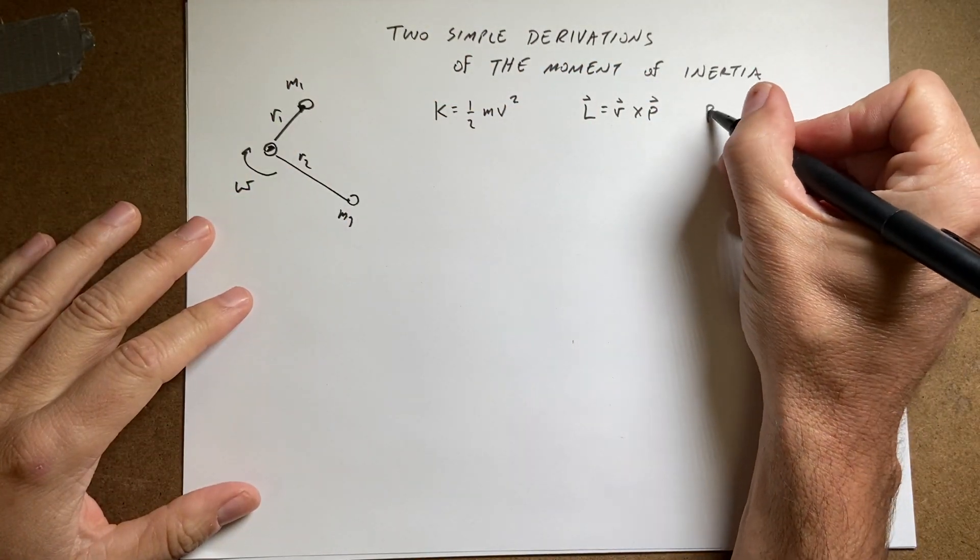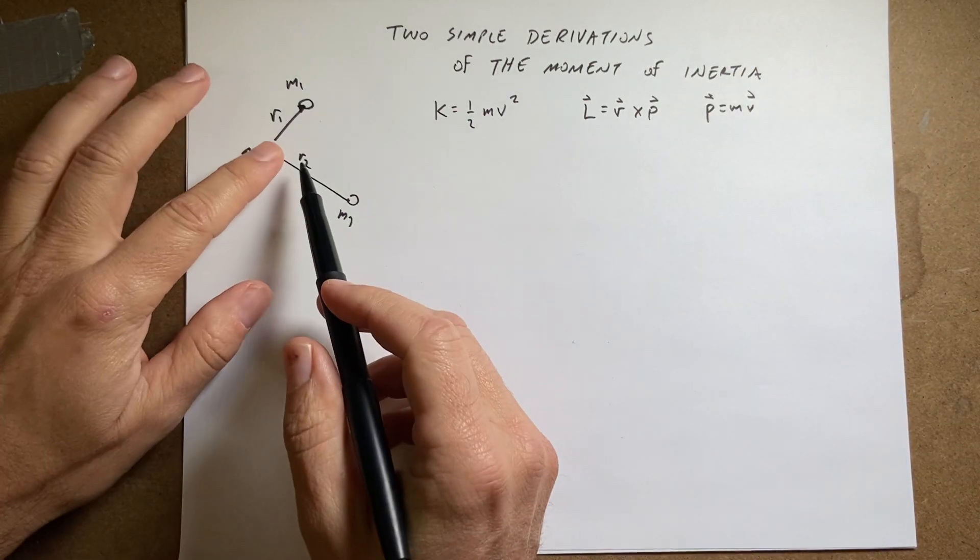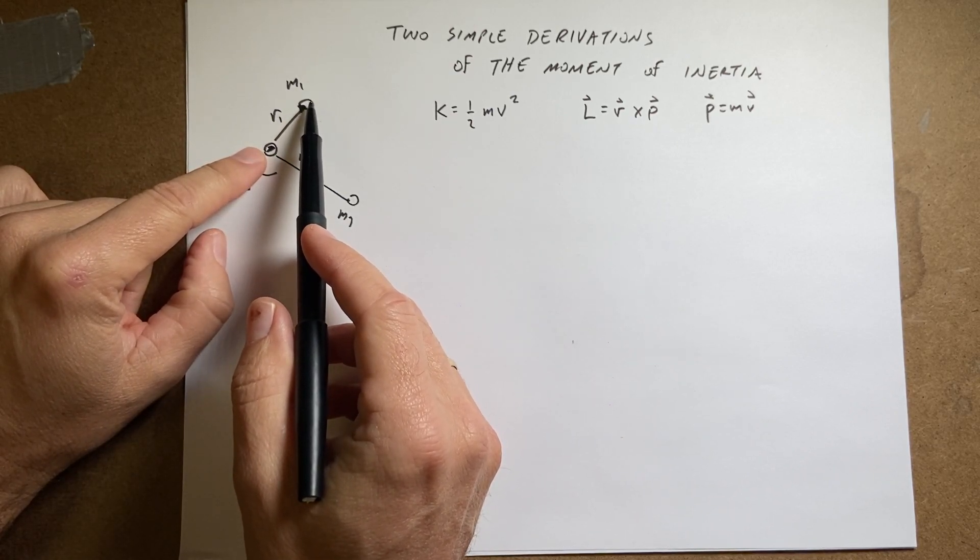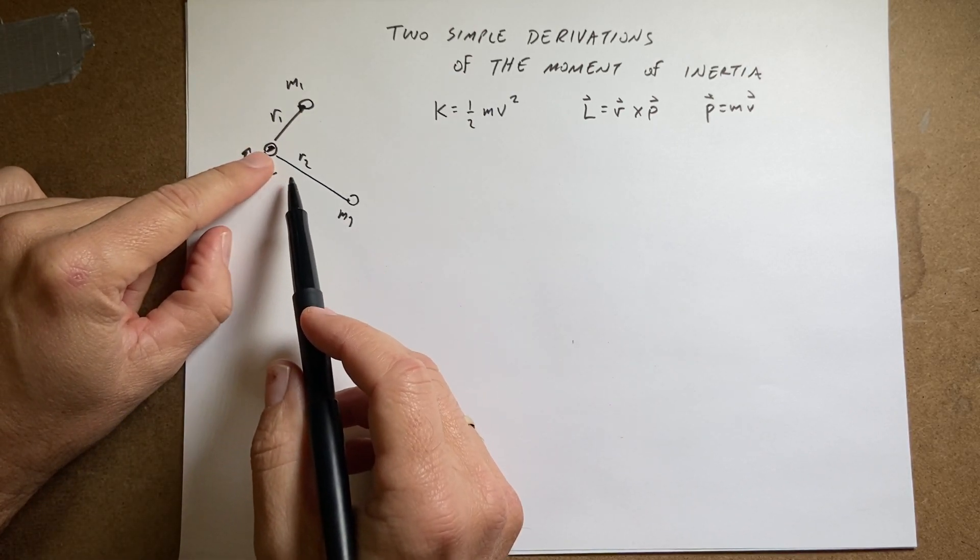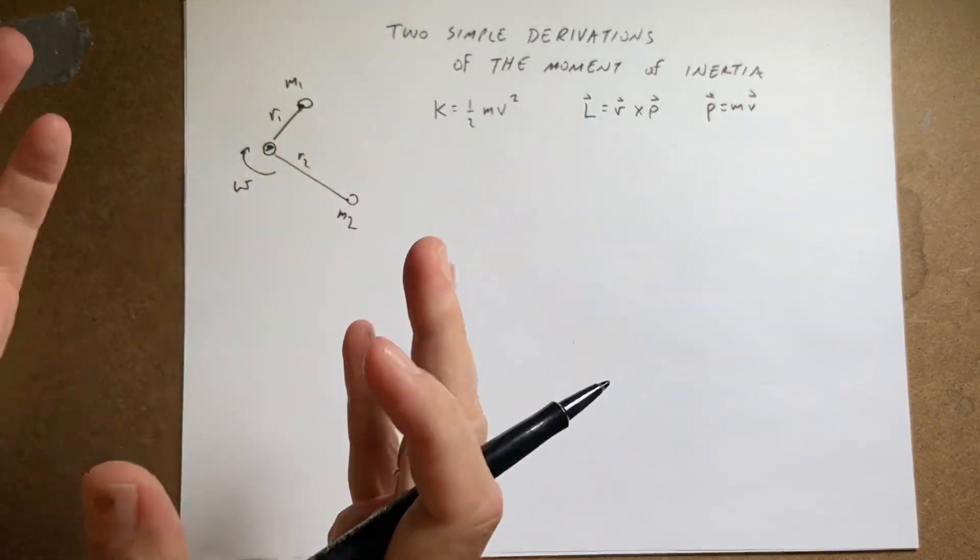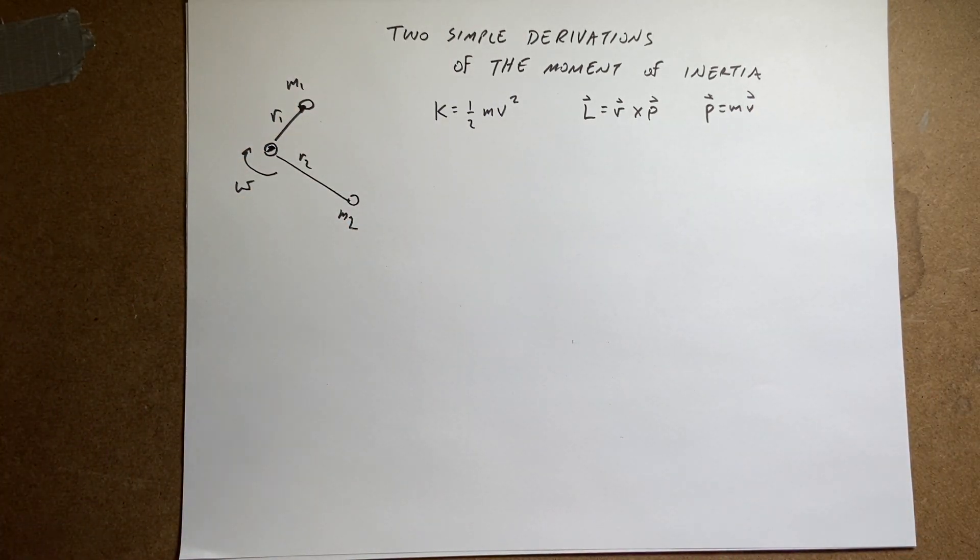And then I guess you need to know momentum is mass times velocity also. So suppose I have this system and it had just, this is not a mass, it's a pivot point. It's got mass m1, a distance r1 from that, and mass m2, a distance r2 away, and then it rotates. So it's a rigid object. These are staying with relative to each other, and they're just two masses.